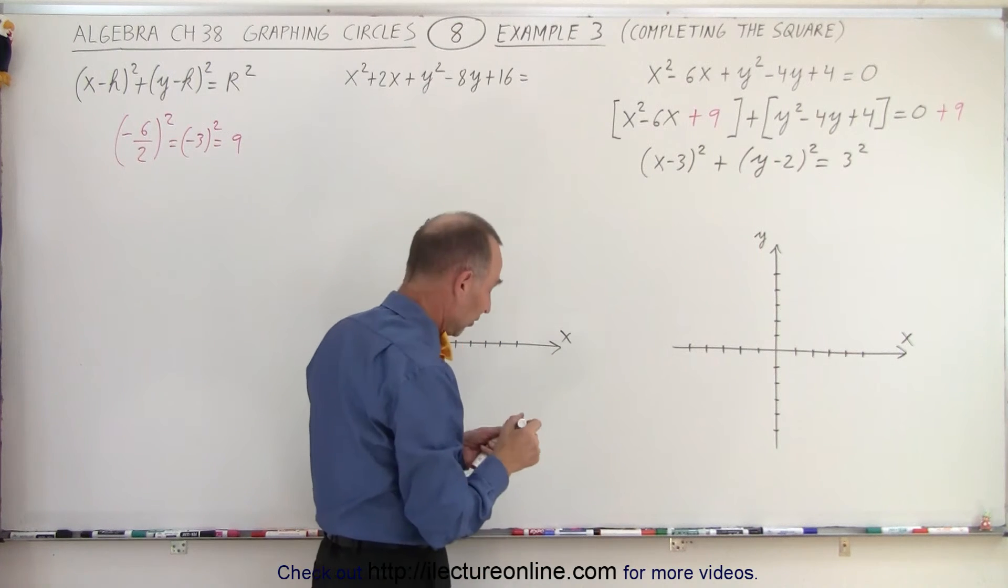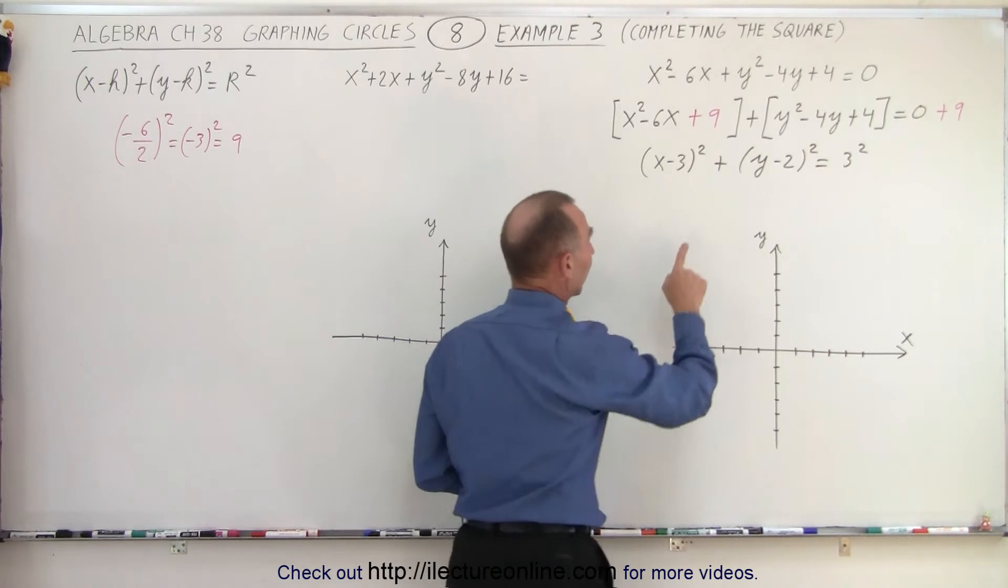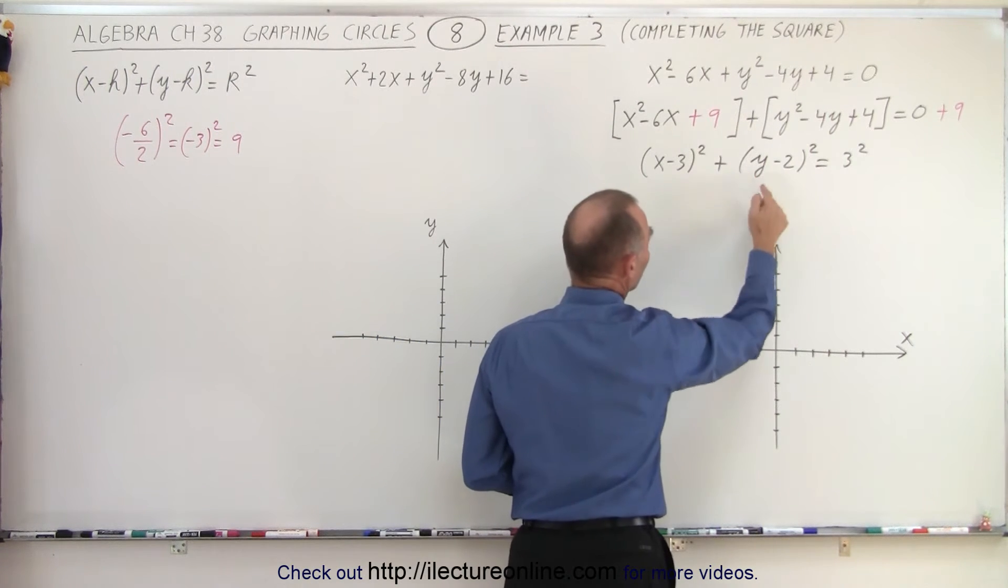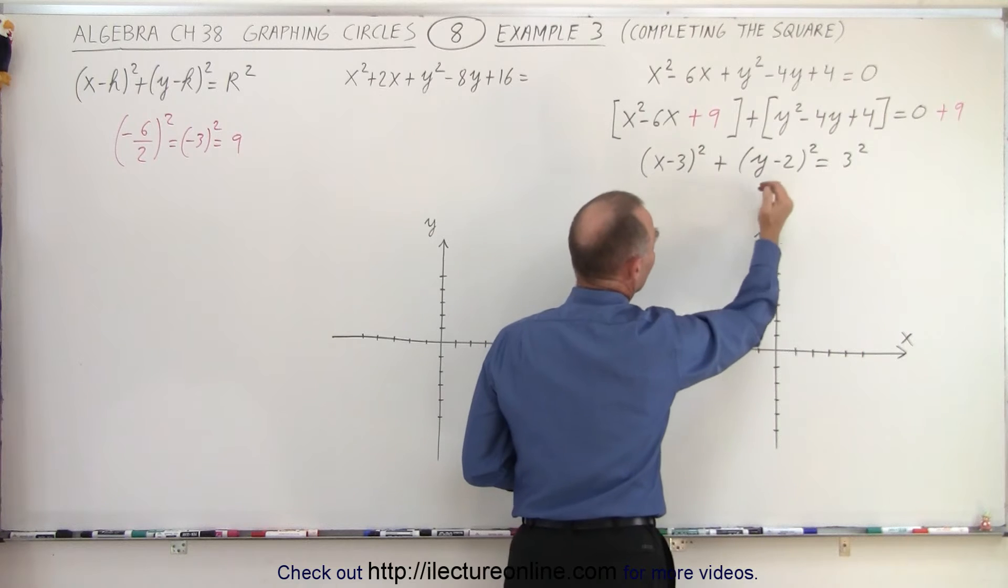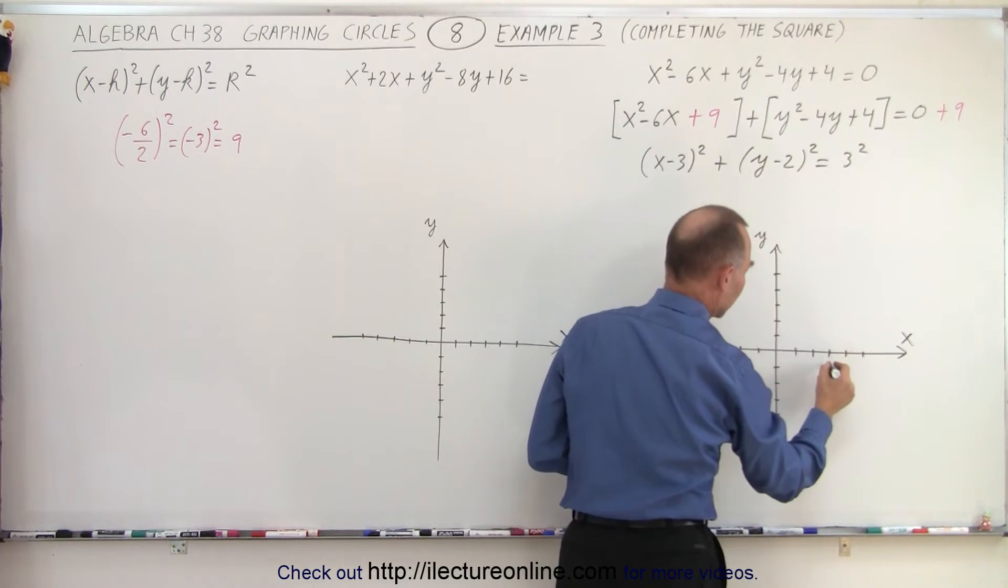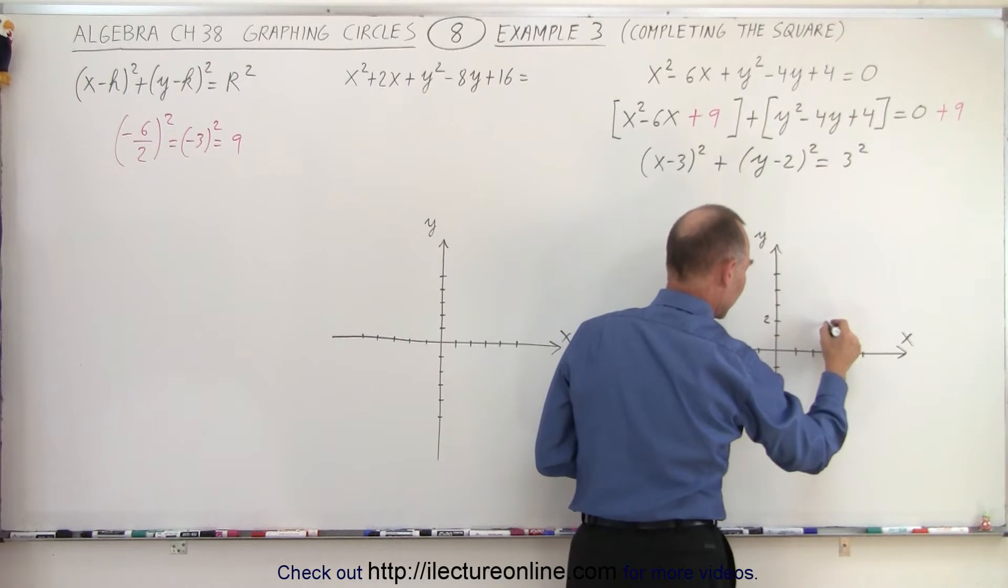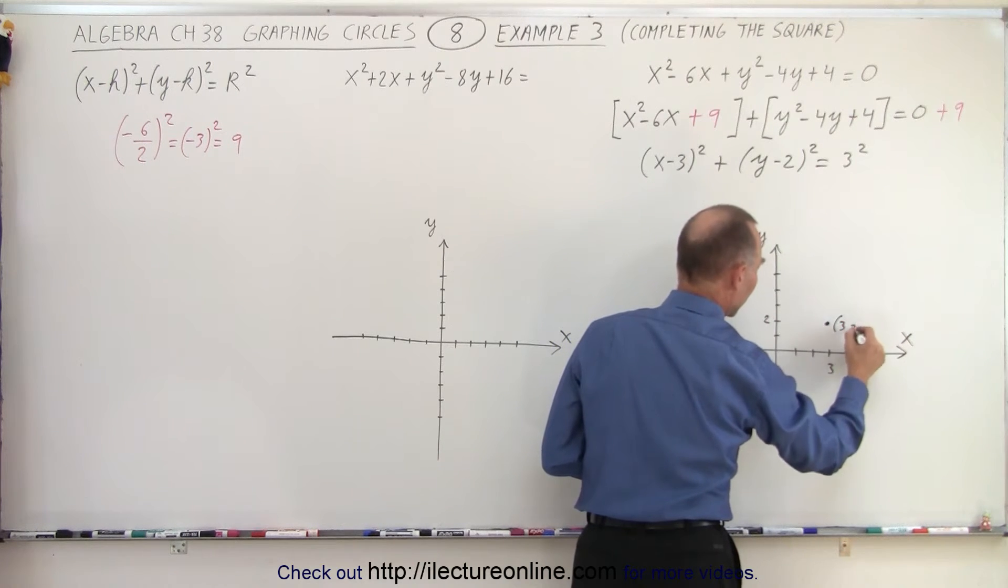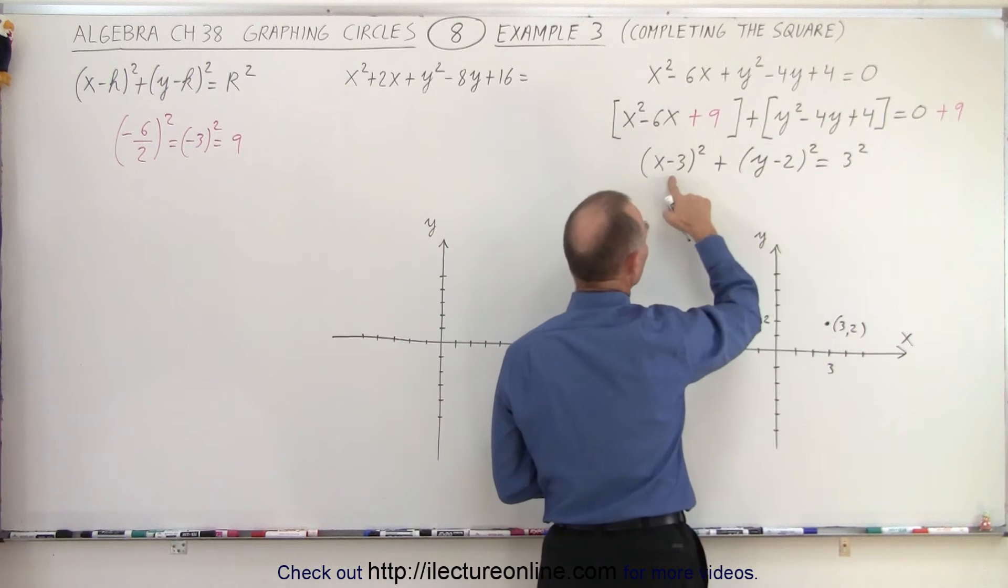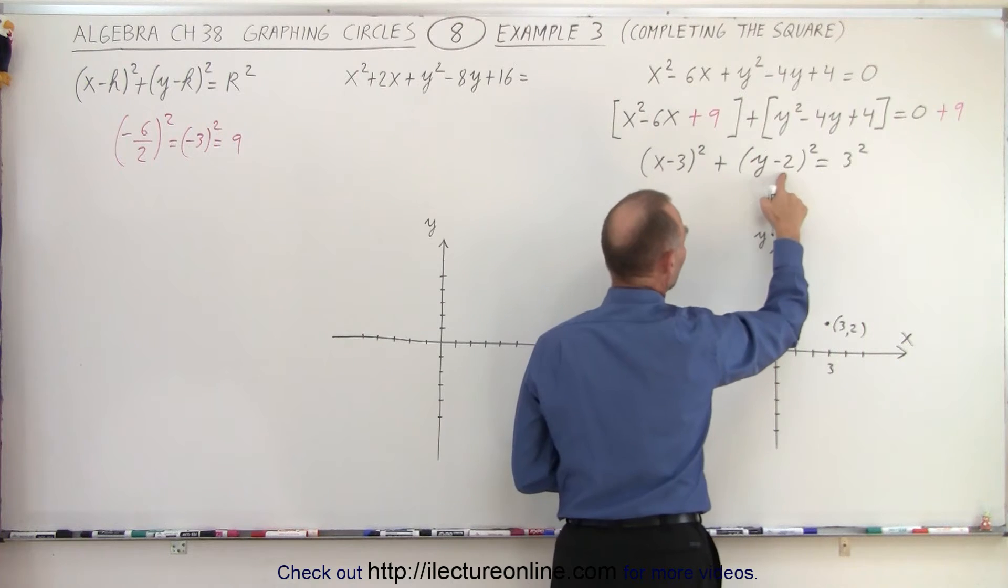And now, we're able to graph this more easily. First, we find the center of the circle where x equals 3 and y equals 2. We're going to shift to the right, 3, and we're going to shift up 2. So, 1, 2, 3, 1, 2, and where those 2 meet right there, that's going to be the center of the circle, 3, 2. That's obtained by finding the shift of the center from the origin to x equals 3 and y equals 2.